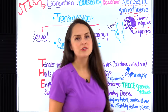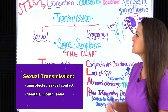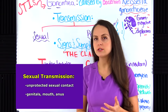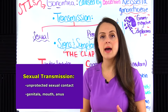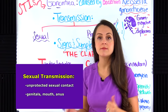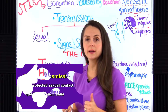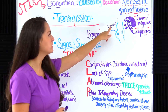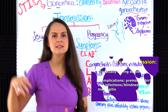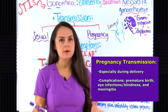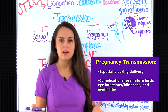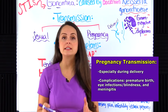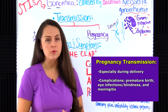How is gonorrhea transmitted? It can be transmitted sexually through unprotected contact through the genitals, the mouth, or the anus with a person who is infected. It can also be transmitted during pregnancy, particularly during delivery — as the baby goes through the birth canal, they can come into contact with this bacteria, which can unfortunately lead to complications for the newborn.